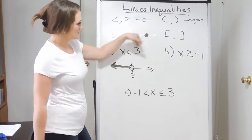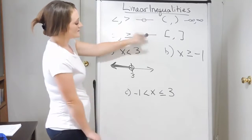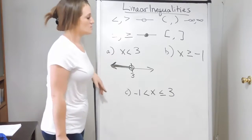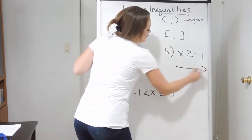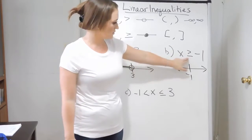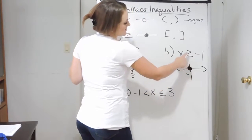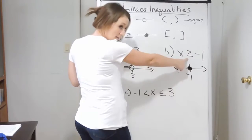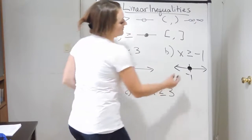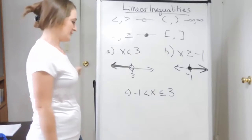The open dot means it doesn't actually equal that number; the solid dot means it does include it. Taking a look at example B: x is greater than or equal to negative one. I draw my number line with negative one on it. We have a greater than or equal to symbol, which means it can include negative one — so I use a solid dot. I want everything greater than it, meaning everything to the right of it, so for this one we would be shading to the right.